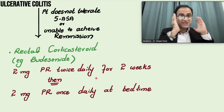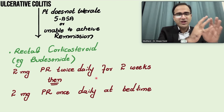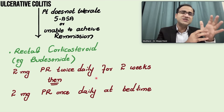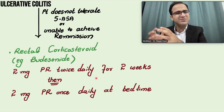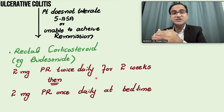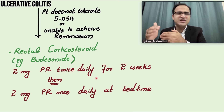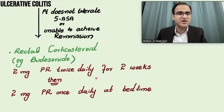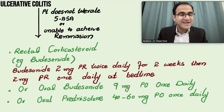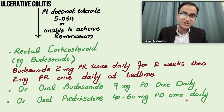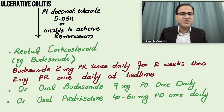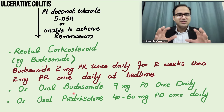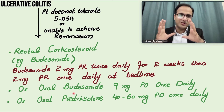Remember: in fulminant colitis, we go straight to IV steroids. But in mild to moderate severity, we start with mesalamine for induction of remission. If no response to mesalamine, go to rectal corticosteroids; if those fail, go to IV. Alternatively, you can use oral budesonide 9 mg orally once daily or oral prednisolone 40 to 60 mg orally once daily. Rectal steroids have a lesser side-effect profile than oral corticosteroids.